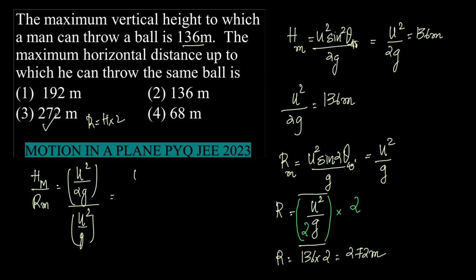Therefore, H_max / R_max is equal to 1/2, or in other words, 2H_max is equal to R_max.